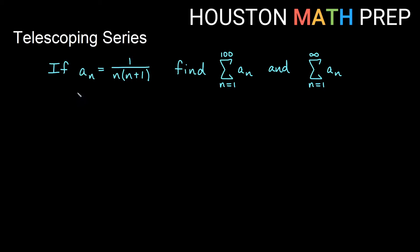Let's look at a couple of examples. We have the sequence 1 over n times n plus 1. We want to find, first of all, the sum of the first hundred terms, and then the sum of an infinite number of terms. The way to see that this is a telescoping series will be to actually break this up into separate fractions.